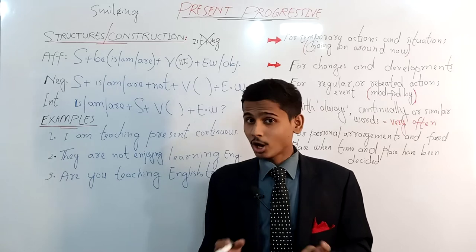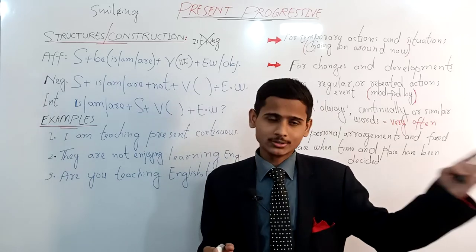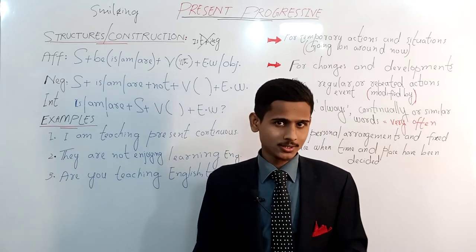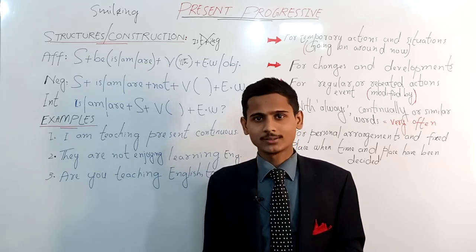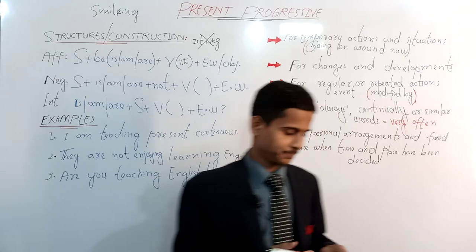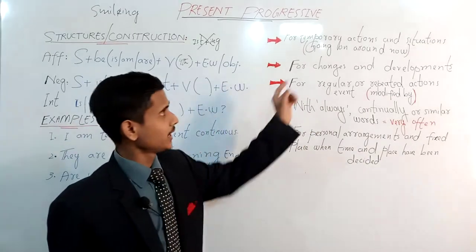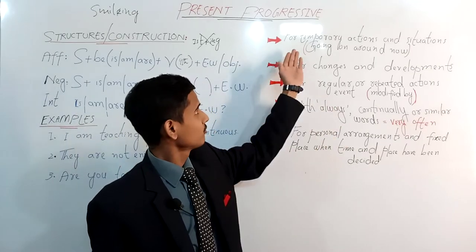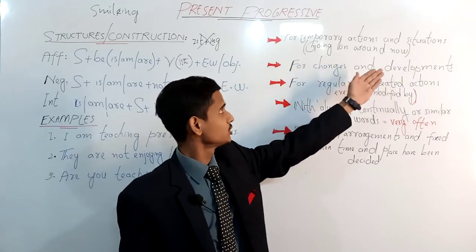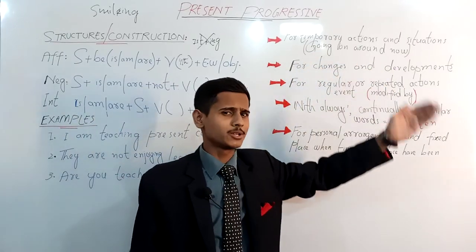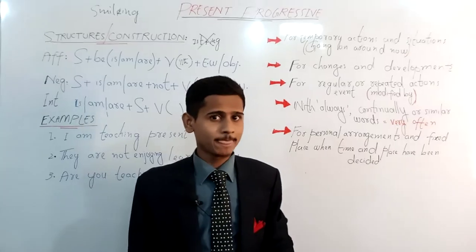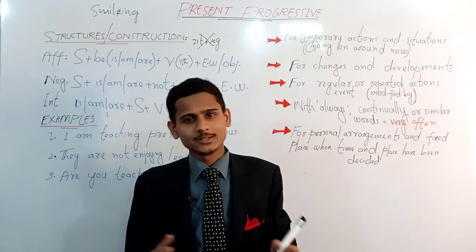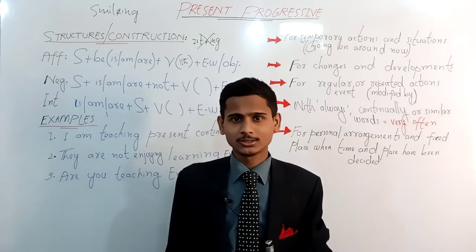From now I am going to discuss the usages of present continuous or progressive tense. The first usage, as already mentioned, is for temporary actions and situations going on around the moment — in other words, actions that may or may not be happening at the time of speaking.